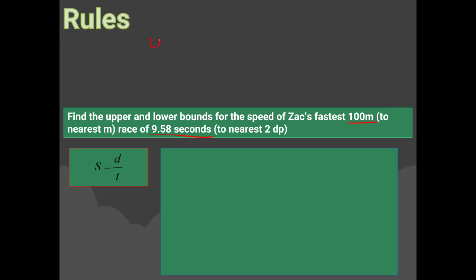These questions might be worded as 'find the highest possible speed' and 'find the lowest possible speed' — these are exam keywords to identify. For 100 metres: lower bound is 99.5 m, upper bound is 100.5 m. For 9.58 seconds: divide 0.01 by 2 to get 0.005; lower bound is 9.575 s, upper bound is 9.585 s.